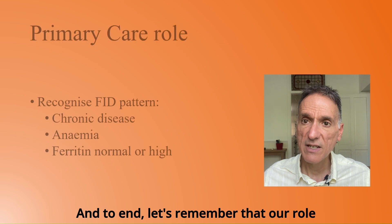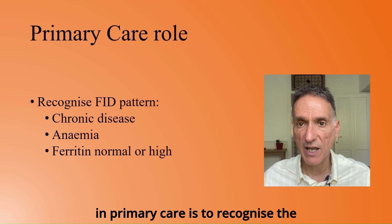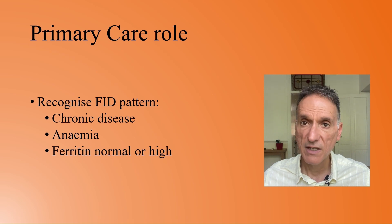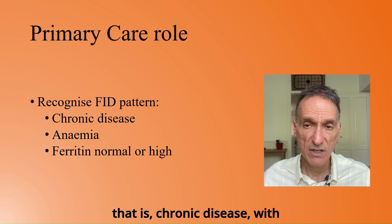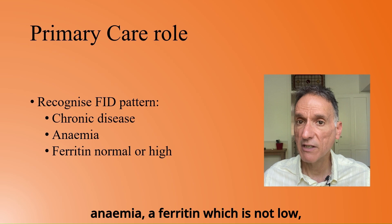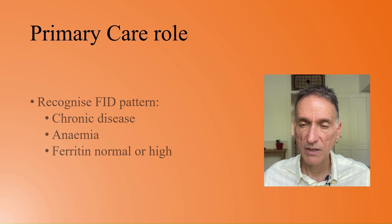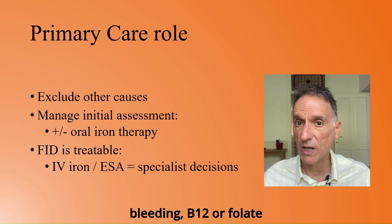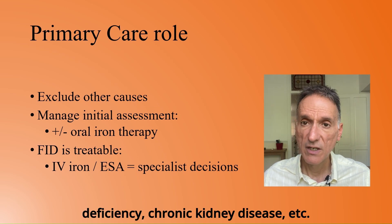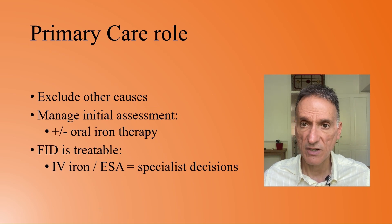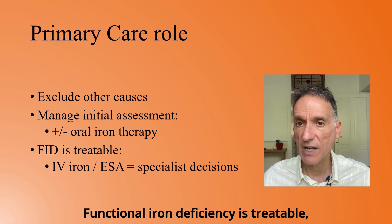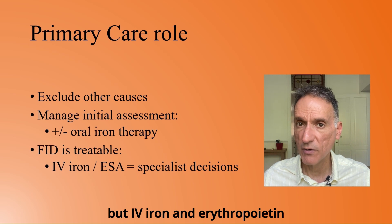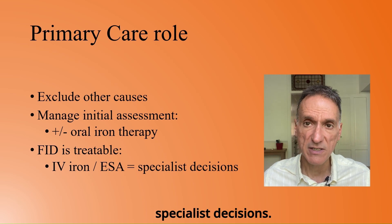And to end, let's remember that our role in primary care is to recognize the functional iron deficiency pattern — that is chronic disease with anemia and a ferritin which is not low. To exclude other causes, for example bleeding, B12 or folate deficiency, chronic kidney disease, etc. Functional iron deficiency is treatable, but IV iron and erythropoietin stimulating agents are specialist decisions.